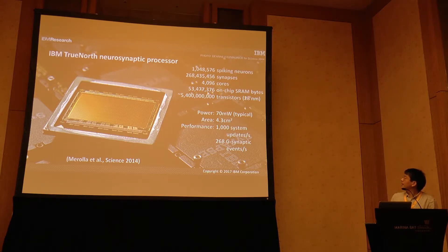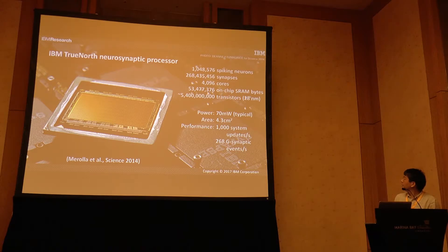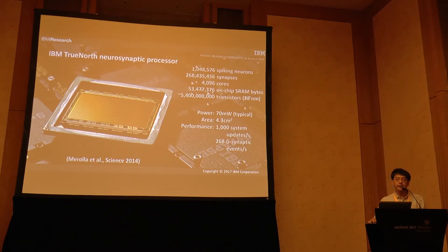We update the chip neurons every millisecond essentially. You might think that's slow — a CPU runs at a gigahertz clock — but there's so much going on in parallel that you're actually updating 268 billion synaptic events per second on this chip. The 1,000 system updates per second, the millisecond tick, is an actual real-time tick. You can think of it essentially as a 1,000 frames per second processor in real-time.